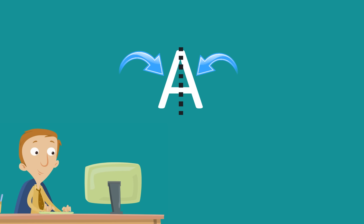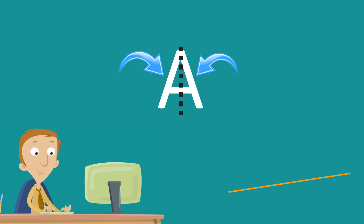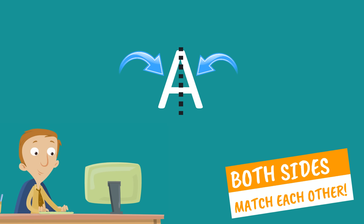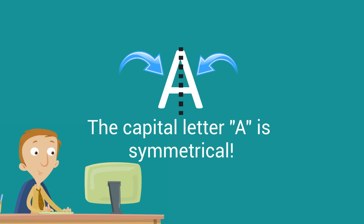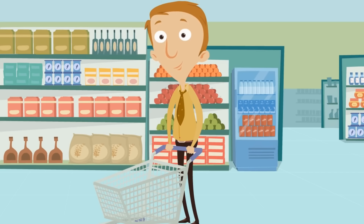Do both sides match? Yes. Great job. Both sides match each other, and if both of those sides match, you know the capital letter A is symmetrical. It has symmetry. That's pretty cool.